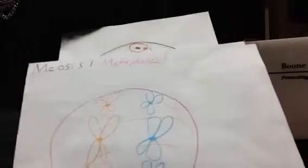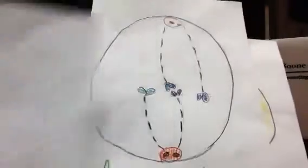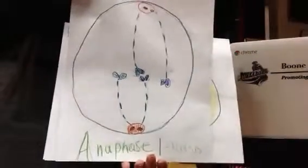There is metaphase, where DNA lines up and connects. After that, it's anaphase, where identical pairs move apart. And after that, there is telophase and cytokinesis.